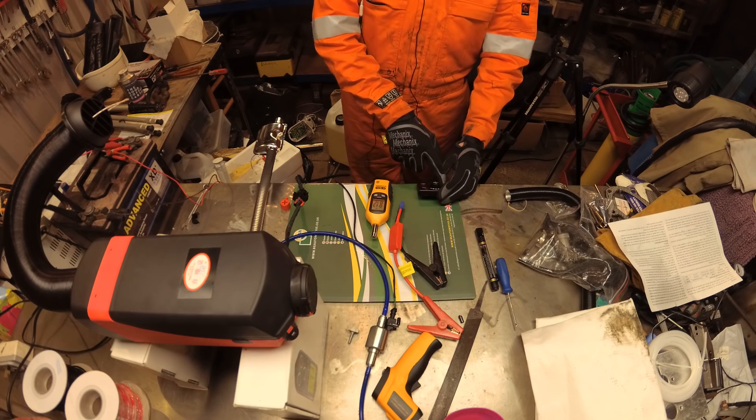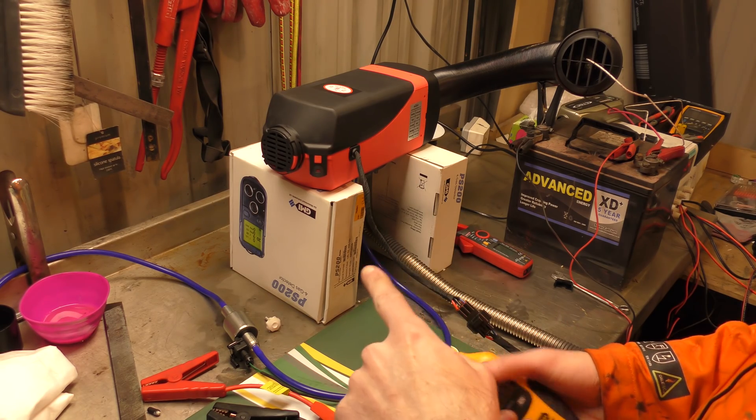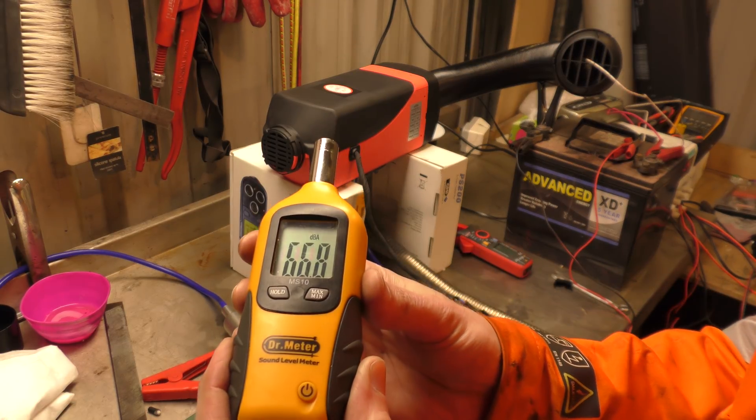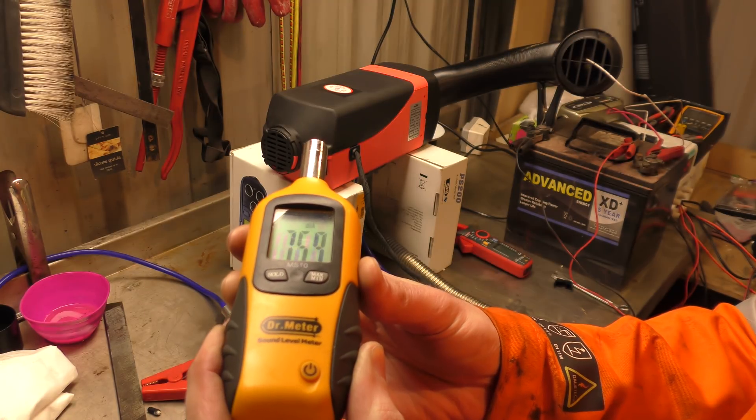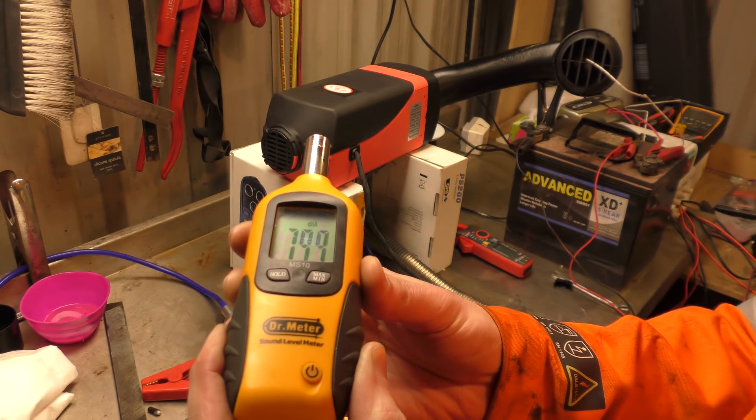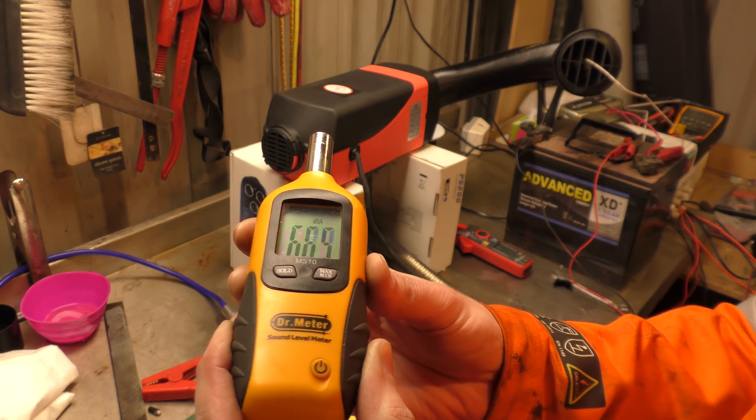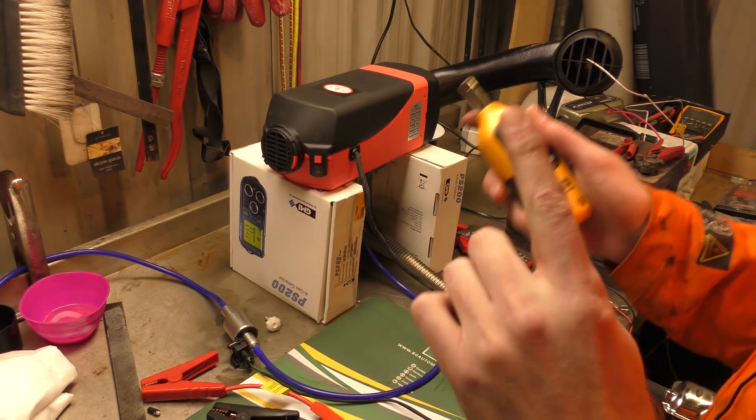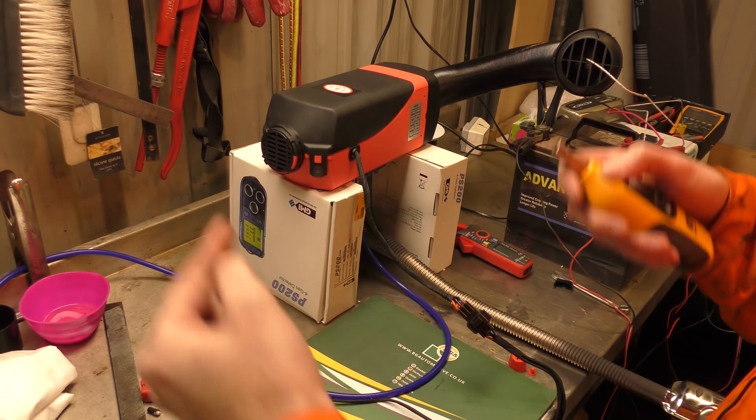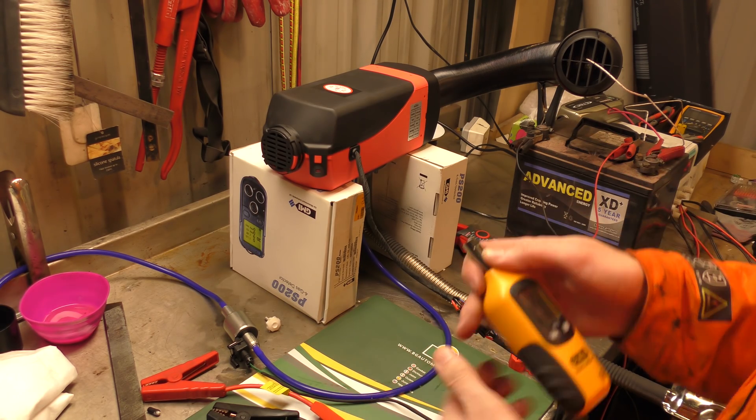Now, minimum power. It's now on its low setting, which can be down at 60 odd decibels. Now, every 10 decibels is a doubling of volume, so it's half as loud as it was before.